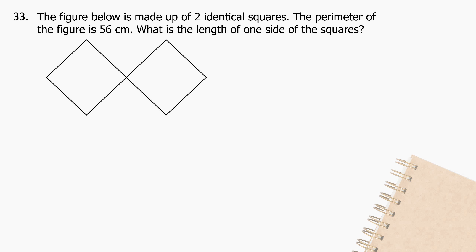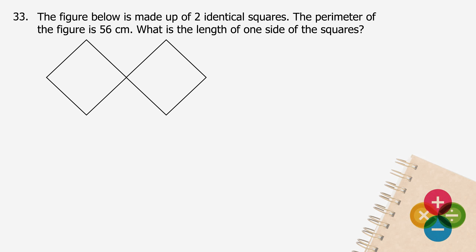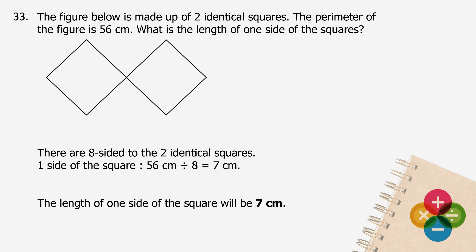Question 33: The figure below is made up of two identical squares. The perimeter of the figure is 56 centimeters. What is the length of one side of the squares? There are 8 sides to the two identical squares. The length of one side will be 56 centimeters divided by 8, and the quotient is 7 centimeters. The length of one side of the square is 7 centimeters.